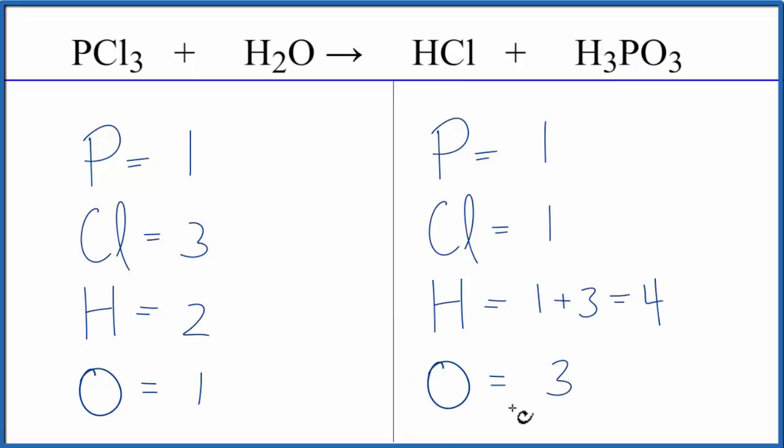Let's leave the oxygens till last. Let's start with the chlorines. We'll put a three as our coefficient in front of HCl. So we have one chlorine times three. That'll give us three chlorines. So those are balanced.